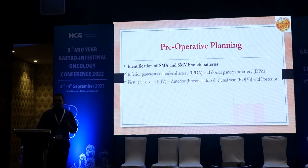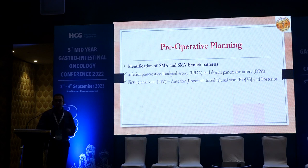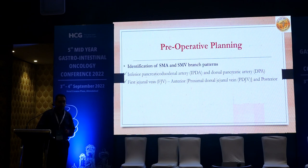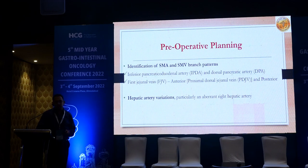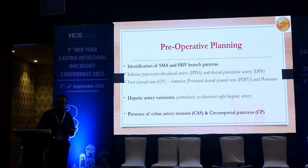Pre-operative planning for minimally invasive surgery is very important. First, we need to see the SMA and SMV branch pattern — you should know where the IPDA artery is, the dorsal pancreatic artery, the first jejunal artery and its anterior and posterior branches, hepatic artery variation particularly the aberrant right hepatic artery, and the presence of any celiac artery stenosis or circumportal pancreas.